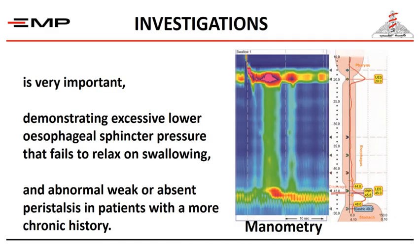Manometry is crucial for diagnosis because it shows high pressure in the lower sphincter exceeding 40 mmHg, and most importantly, failure of relaxation on swallowing. Associated weak or absent peristalsis in the body of the esophagus can also be shown in long-standing cases.